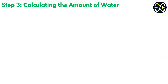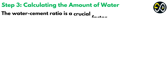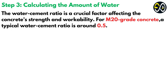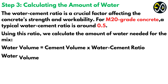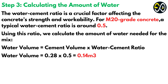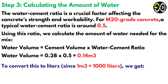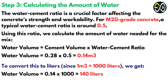Step 3: calculating the amount of water. The water-cement ratio is a crucial factor affecting the concrete's strength and workability. For M20 grade concrete, a typical water-cement ratio is around 0.5. Using this ratio, we calculate the amount of water needed for the mix: Water volume equals cement volume times water-cement ratio, which equals 0.28 × 0.5 equals 0.14 cubic metres. To convert this to litres, since one cubic metre equals 1,000 litres, we get water volume equals 0.14 × 1,000 equals 140 litres.